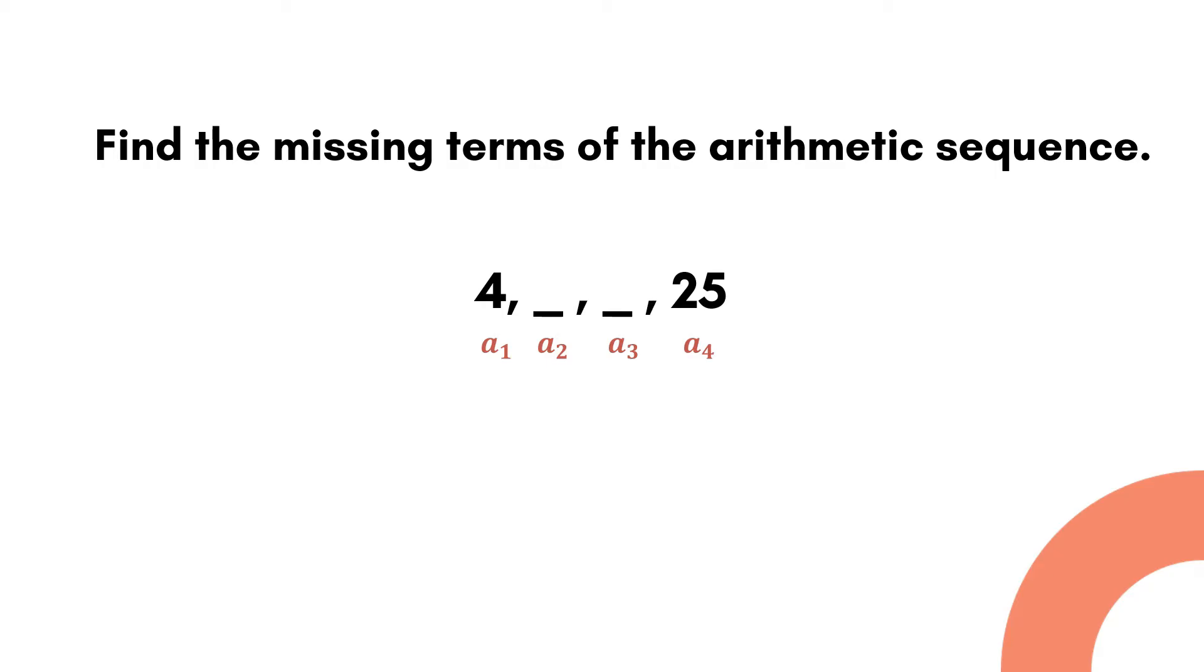Let's identify our given values now. a sub 4 is equal to 25, n is equal to 4 because we have four terms in the sequence, and the first term or a sub 1 is equal to 4.